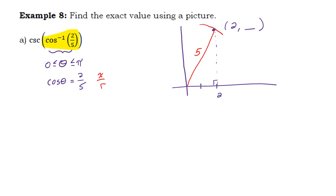Now, why do I want to figure out that y-value? Well, remember what we're trying to figure out is the cosecant of this angle. This is some angle. Let's draw this angle into our picture right here. That's some angle. So if I replace what's in the parenthesis there with that angle, that is the answer to the inverse cosine of two-fifths.